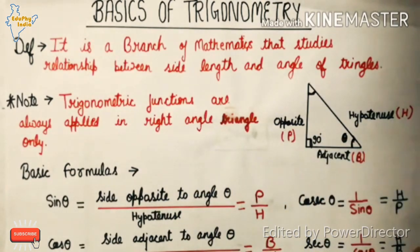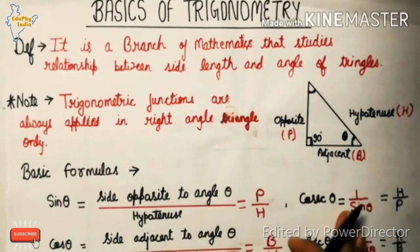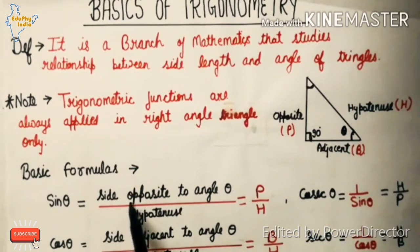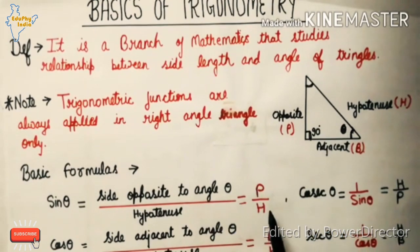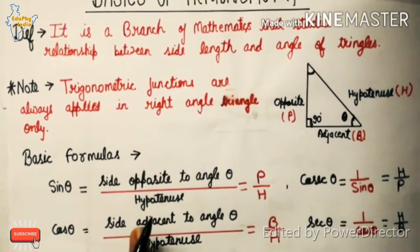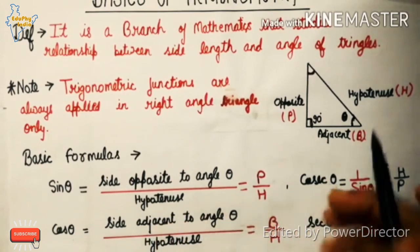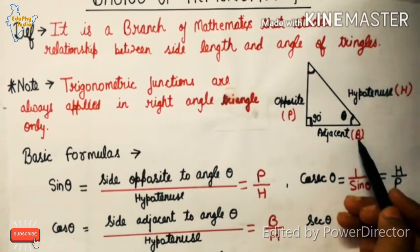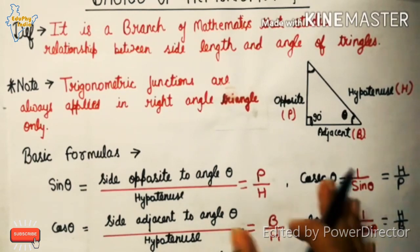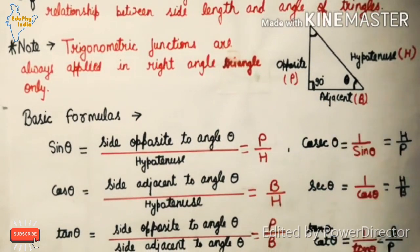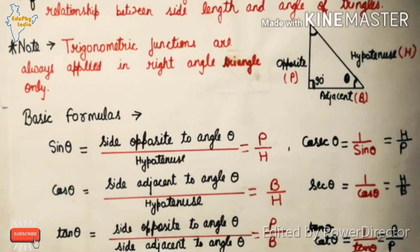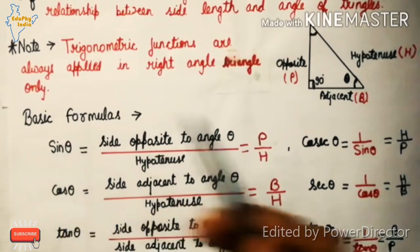The basic formulas are: sin theta equals the side opposite to angle theta (perpendicular) upon hypotenuse, written as P upon H. Cos theta equals the side adjacent to angle theta (base) upon hypotenuse, written as B upon H. And tan theta equals the side opposite upon the side adjacent, which is perpendicular upon base, P upon B.